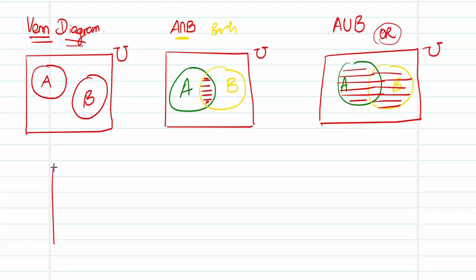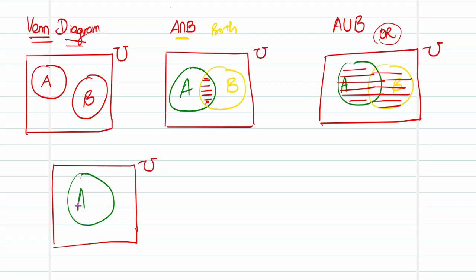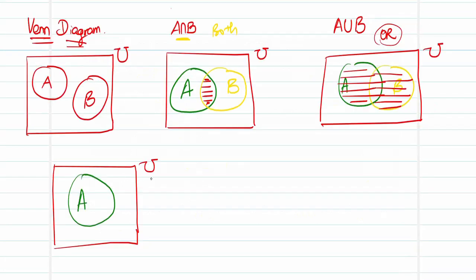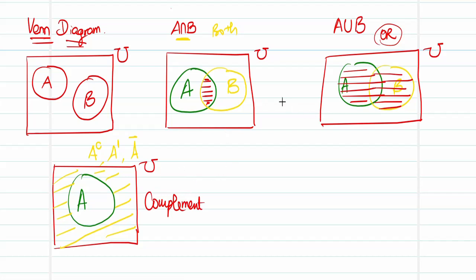Moving on to the complement: given the universal set U and a set A, the complement contains elements in U that do not belong to A. They lie outside of A but within the universal set. You write it as A^c, A', or Ā. In the Venn diagram, the shaded region outside the circle A but within the rectangle represents the complement of A.